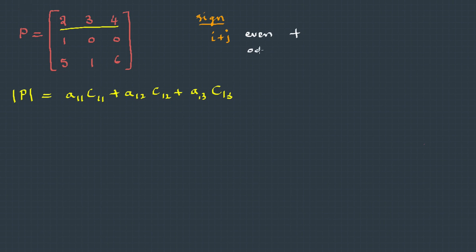So you see here, 1+1 is 2, even, therefore this will be positive. 1+2 is 3, that's an odd number, so negative. 3+1 is 4, positive.